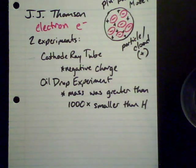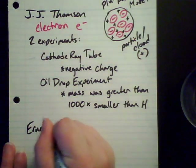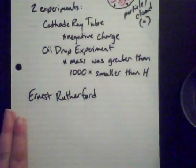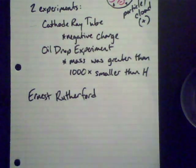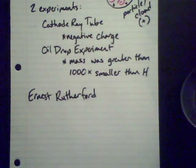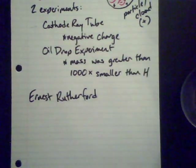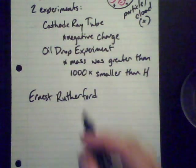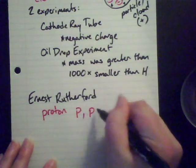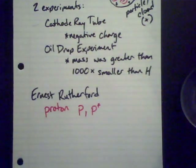A man who worked with J.J. Thompson was Ernest Rutherford. Ernest Rutherford was from New Zealand — there are not a lot of chemists from New Zealand, so he's unique in that regard. He worked with J.J. Thompson in his lab and did experiments that figured out what that positively charged stuff in the atom had to be, because he was the one who discovered the proton. The proton is usually abbreviated as P, sometimes with a P to the plus sign.